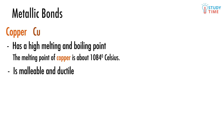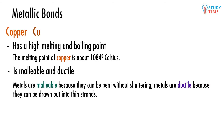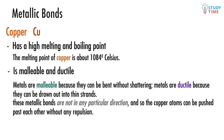Copper is malleable and ductile — two special words you'll need to know. Metals are malleable because they can be bent, unlike ionic solids. Metals are ductile because they can be drawn out into thin strands. Both of these properties arise because metallic bonds are not in any particular direction, and so the copper atoms can be pushed past each other without any repulsion.